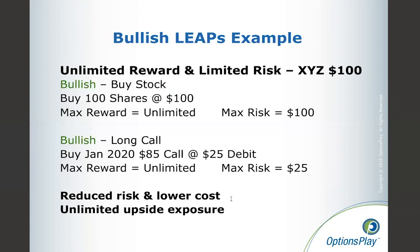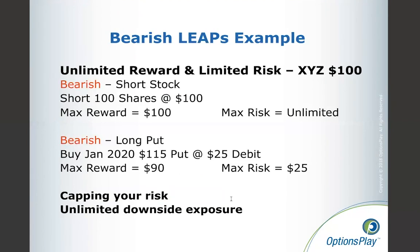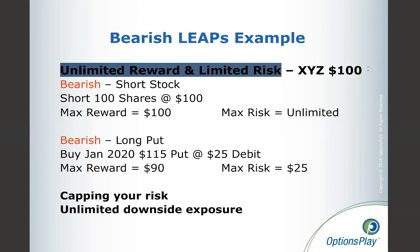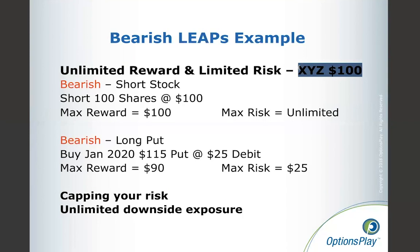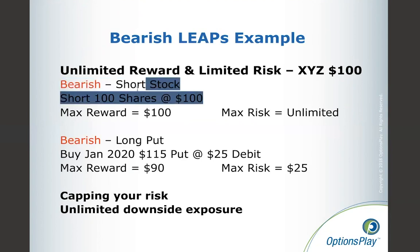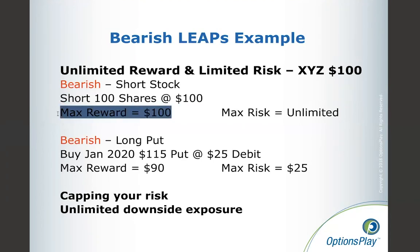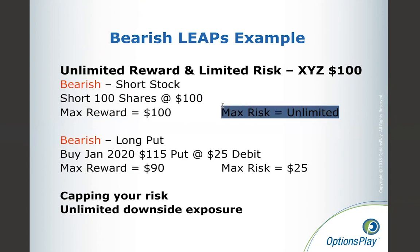For a bearish example, using the same stock XYZ at $100 — if you're bearish and think it'll go to $70 or $50, traditionally you'd short the stock. Shorting 100 shares gives you a max reward of $100 per share if the stock goes to zero, but your risk here is unlimited. That's really why I rarely advocate for shorting a stock — it doesn't make sense to ever get into a trade with unlimited risk.